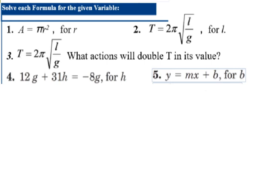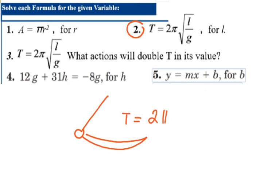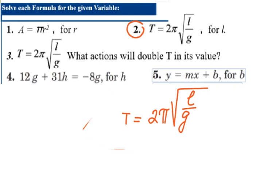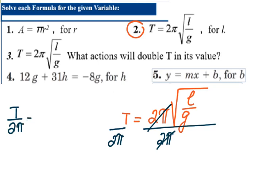In number two, I need to solve for l in the pendulum period equation: T = 2π√(l/g), where l is the length of the string and g is the acceleration due to gravity. I divide both sides by 2π, so 2π cancels on the right. That gives me T/(2π) = √(l/g).